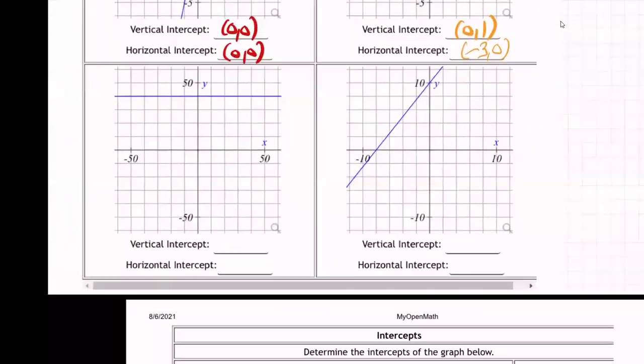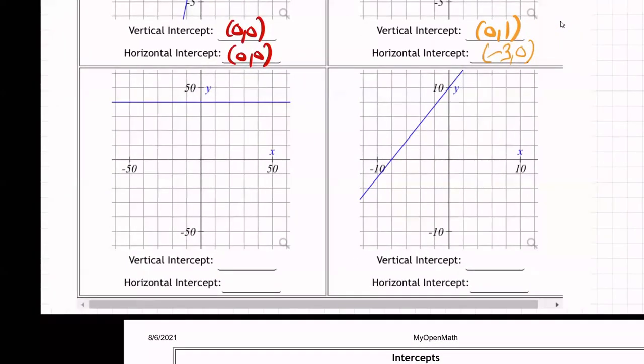Okay, now on this third one, looking here, it hits right here for the vertical. Now, what is that point? Well, you can tell it's 10, 20, 30, 40. That's over zero, up 40, isn't it? That point right there is over zero, up 40.